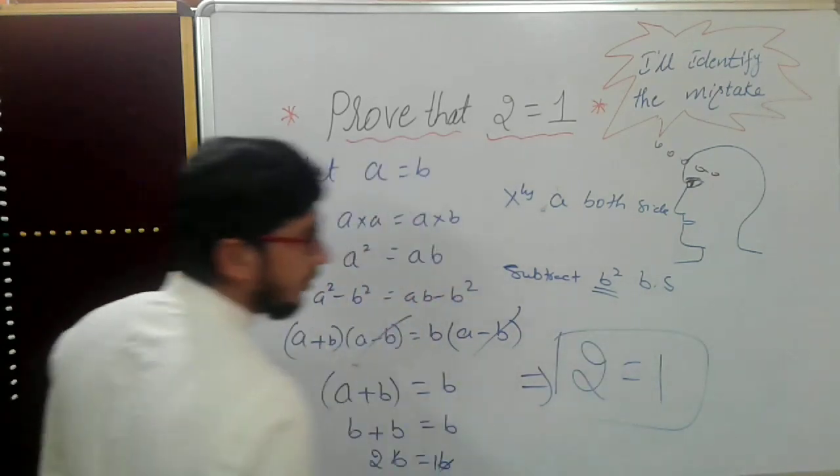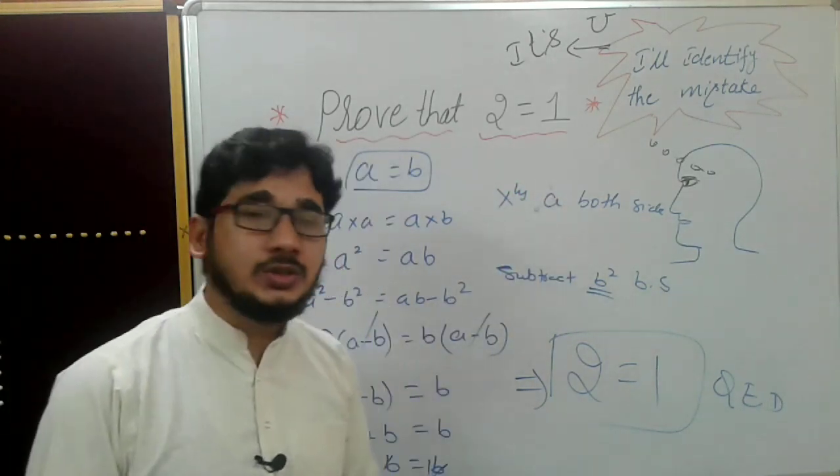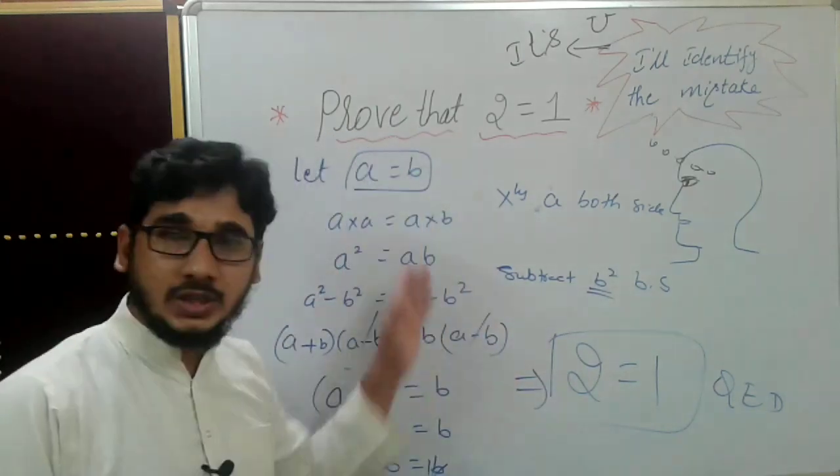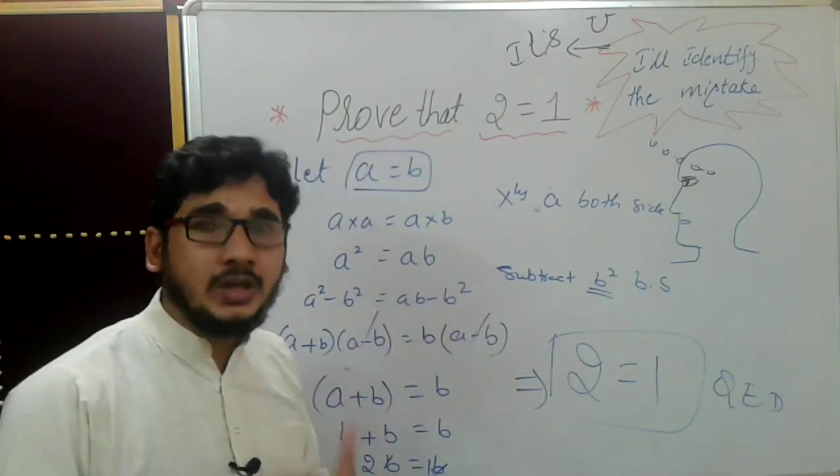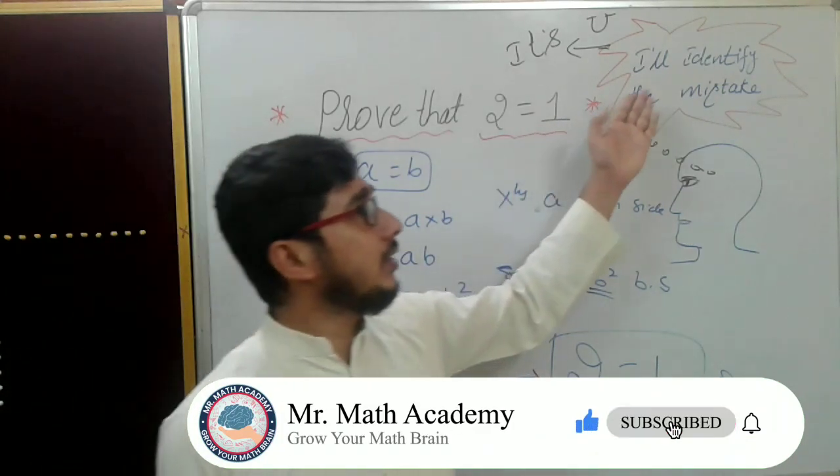Hence we have proved that 2 is equal to 1. We know that there is a mistake because two will never be equal to one. That is the reason there is a mistake somewhere here. You can find it out—we can find it out. Let's try to find out.